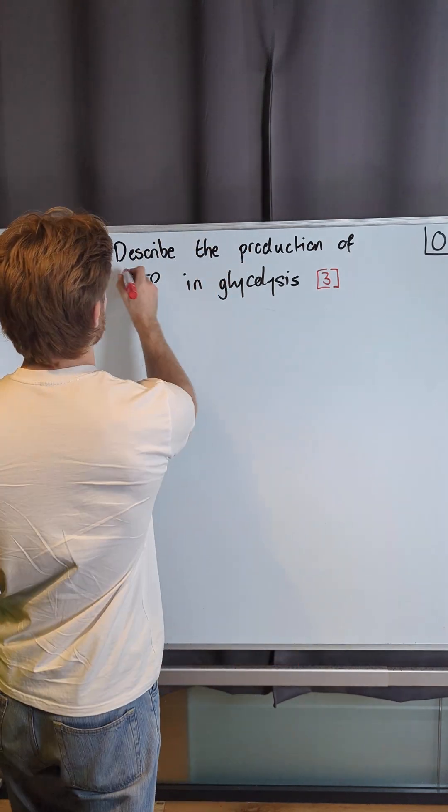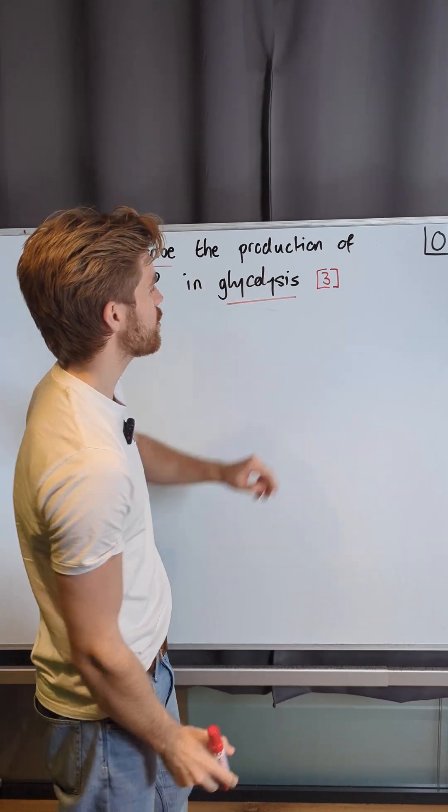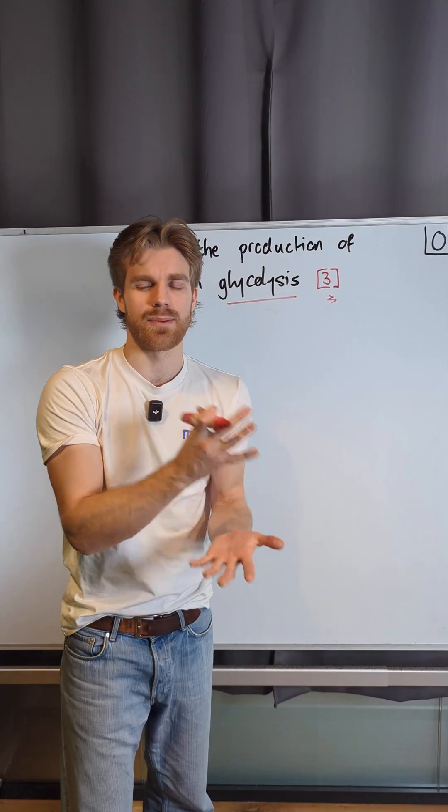The question says, describe the production of ATP in glycolysis. We've got three marks to try and get. So I want to think about how much level of detail am I giving?